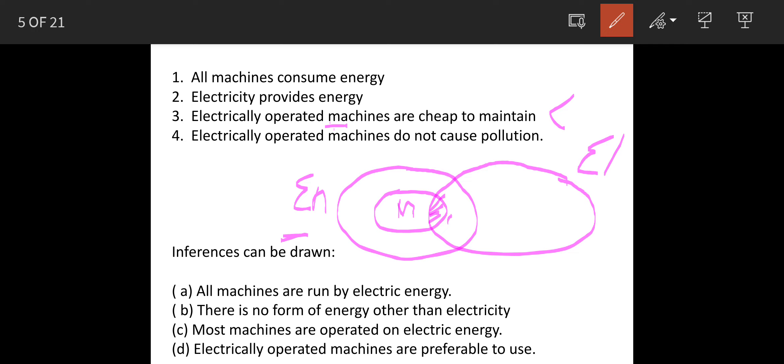And electrically operated machines do not cause pollution. So let's say we have a green circle. Now because of space I will not draw a complete circle, I will draw it like this. This green circle represents no pollution, and electrically operated machines, this part, do not cause pollution. So this is the status.